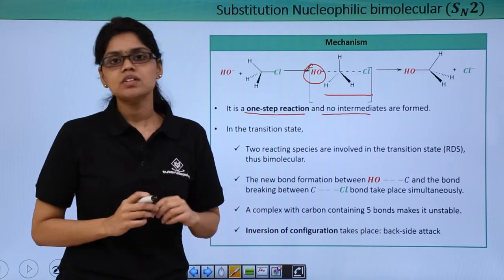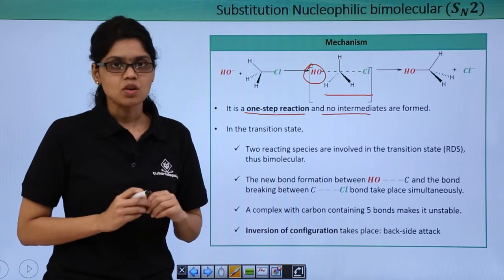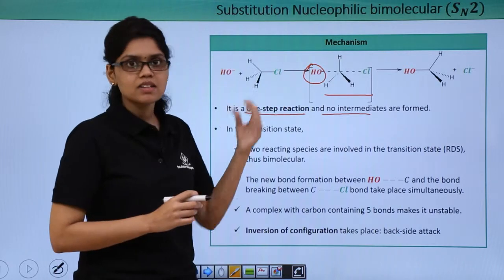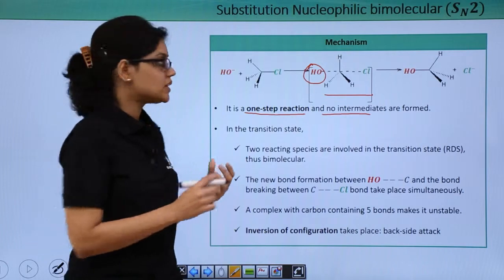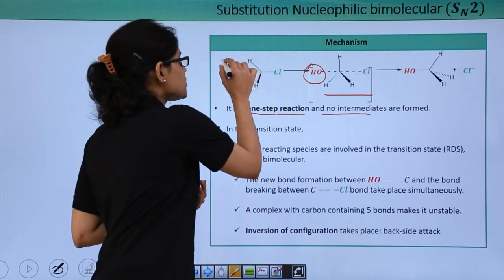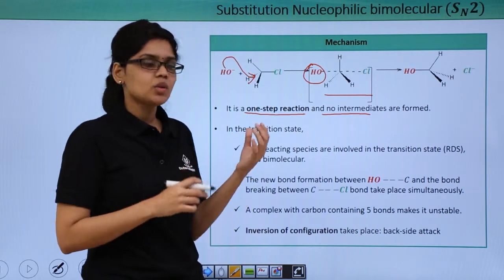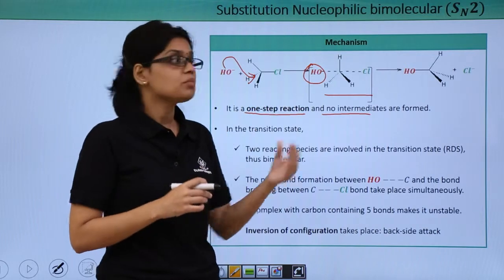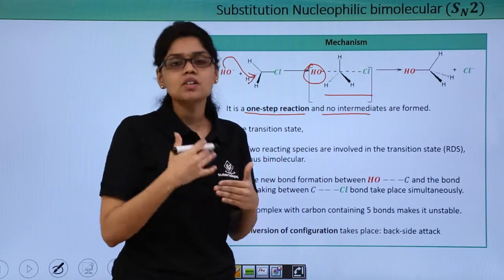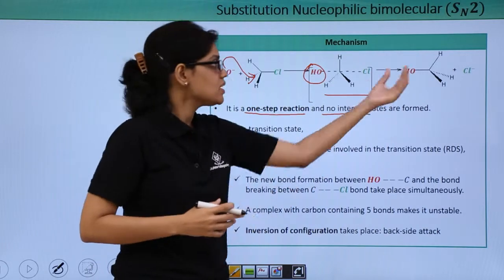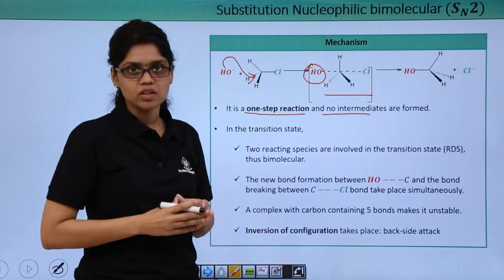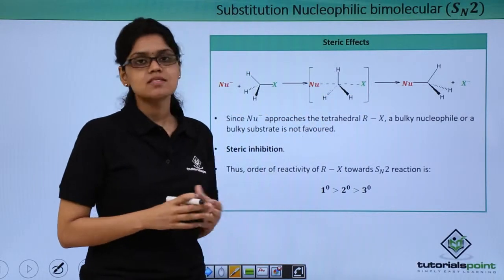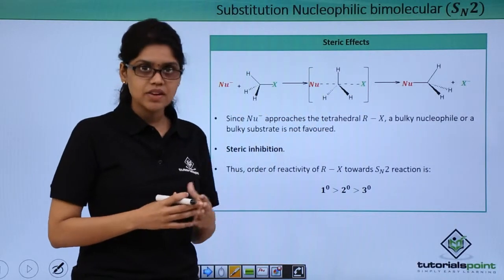Another very important thing to note is that the nucleophile attacks the alkyl halide substrate in a backside fashion. It attacks from the backside such that if you look at the product and the reactant, you can see that the product has a completely inverted configuration as compared to the reactant molecule. Now that we know the nucleophile attacks the RX in a backside fashion.